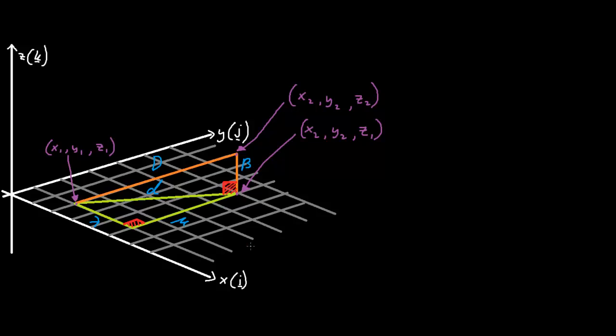Now, what you also need to know about this diagram is that the small d, which is the hypotenuse of the right angle triangle on the plane z equals 0, is the adjacent side of another right angle triangle sticking out of the plane z equals 0. This right angle triangle has an adjacent side of length small d, a width beta, and a hypotenuse distance which is a big d. It's the length of this big d that we're looking for.